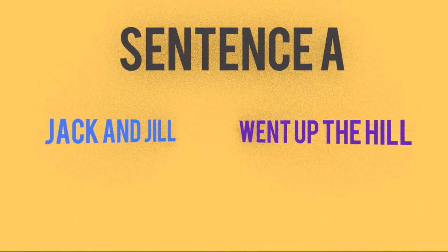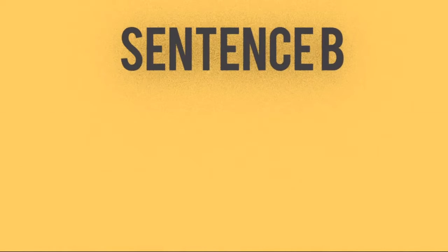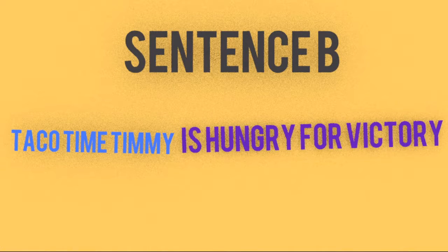'Jack and Jill' is Sentence A's subject, and 'went up the hill' is its predicate. In the other corner we have Sentence B — its sentence is 'Taco Time Timmy is hungry for victory.' The subject is 'Taco Time Timmy' and the predicate is 'hungry for victory.' He's a fan favorite, folks.